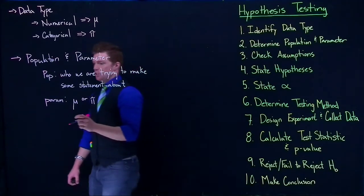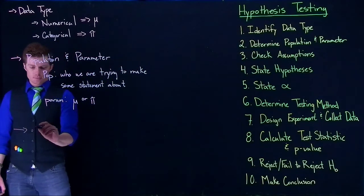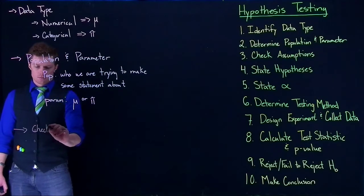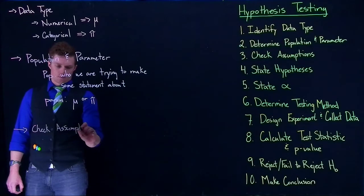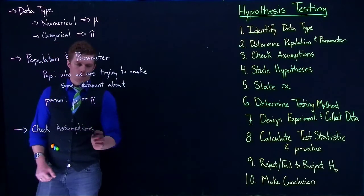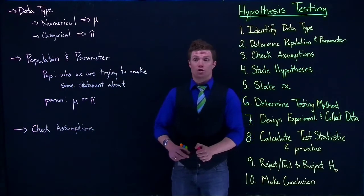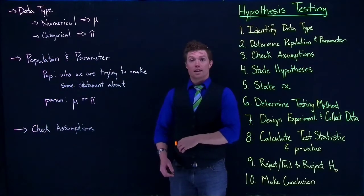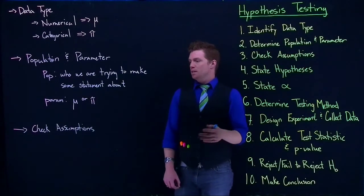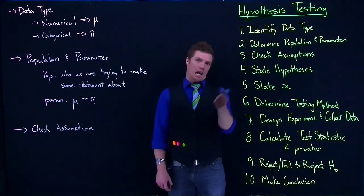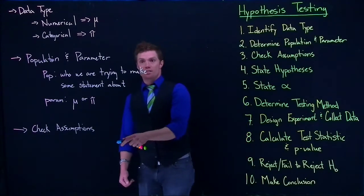The third one that we need to do is we need to check some of our assumptions. Now when we check our assumptions, we have to take it from one of two standpoints. One standpoint is that the experiment has already been conducted, everything's already been done, and so we just need to check to make sure: can we even do this analysis? We need to check the assumptions.